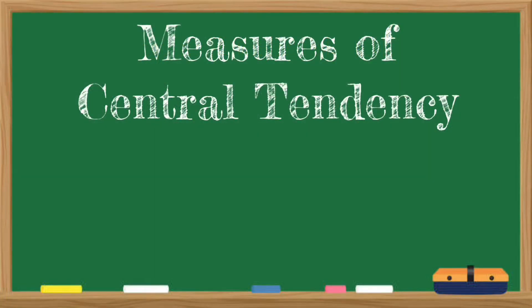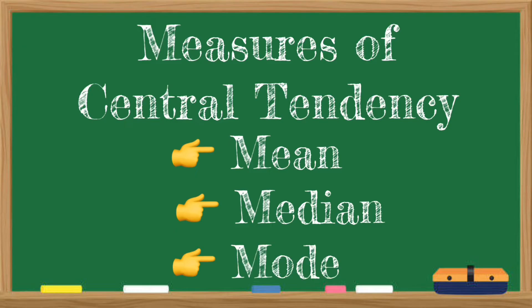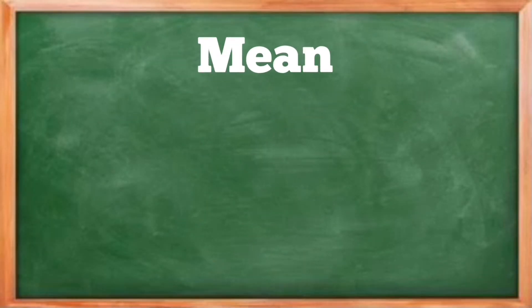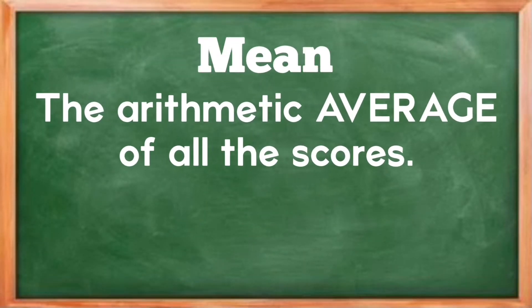Most sets of data show a distinct tendency to group around a central value. When people talk about an average value, or the middle value, or the most frequent value, they are talking about the three most common measures of central tendency: the mean, median, and the mode.